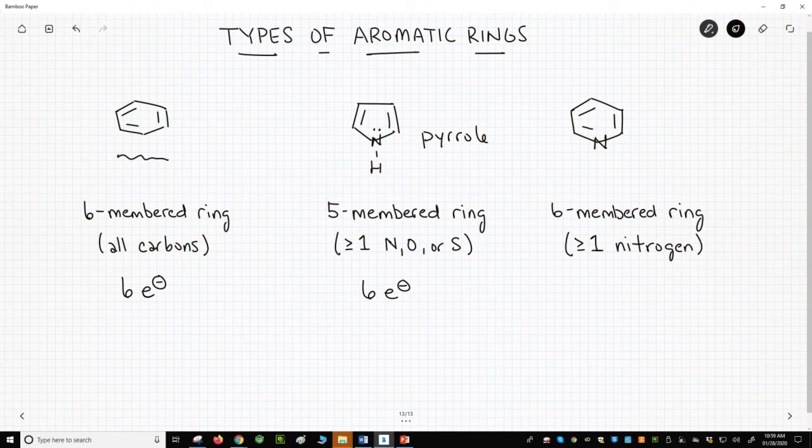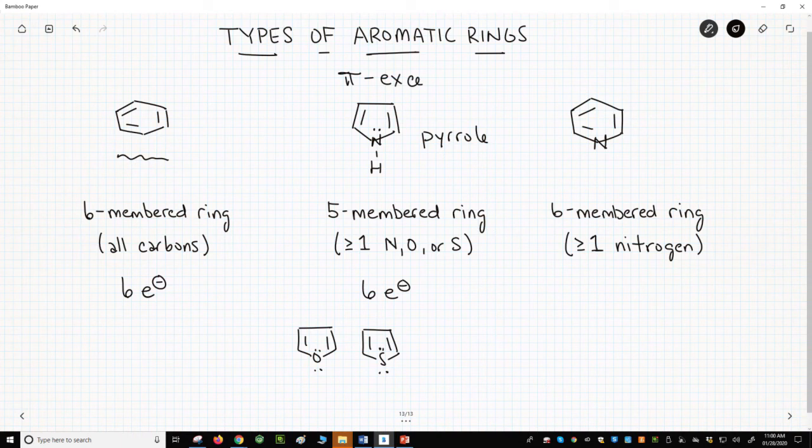Rings like pyrrole or other examples like furan and thiophene are called, at the top of the screen, pi excessive rings. These rings are especially nucleophilic and tend to be very reactive in electrophilic aromatic substitutions.